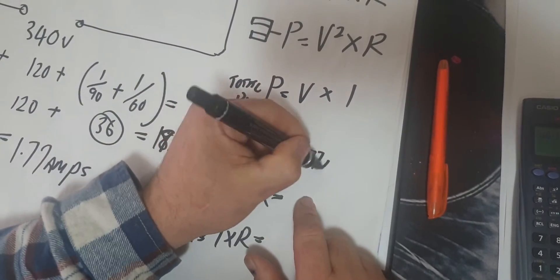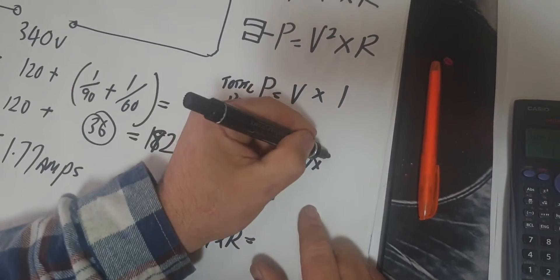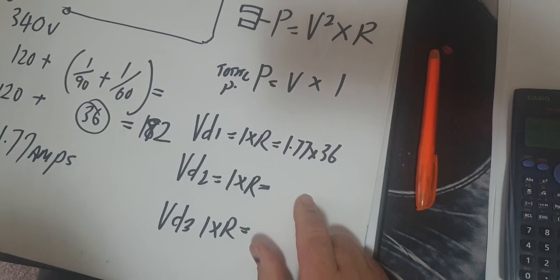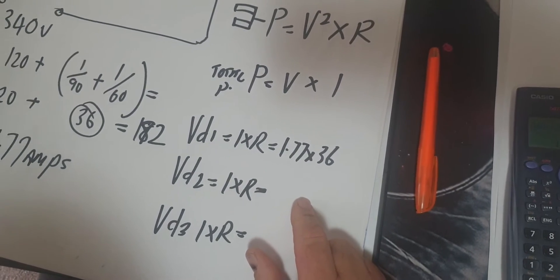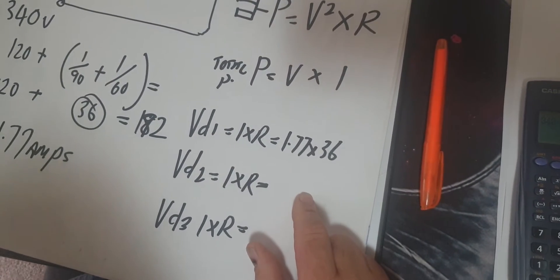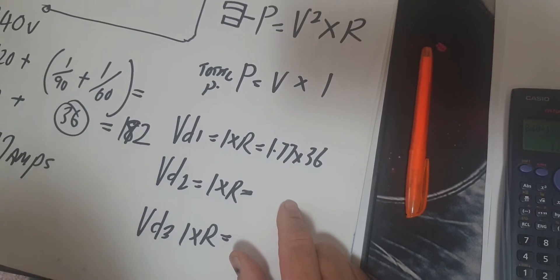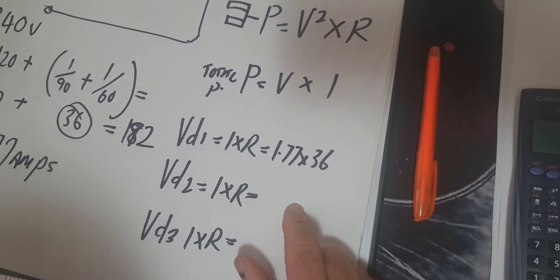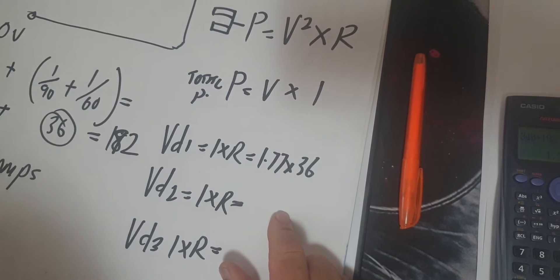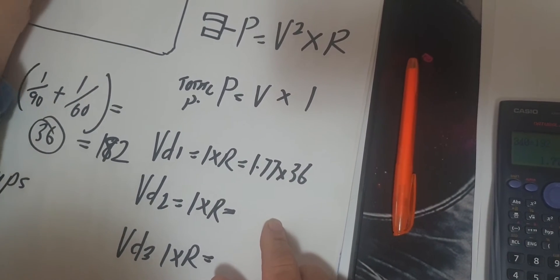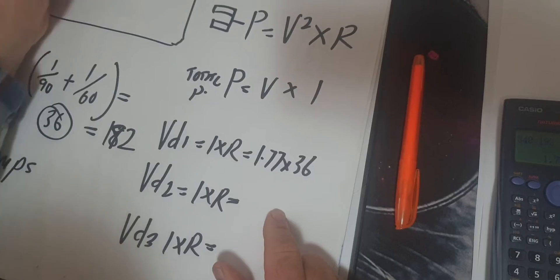We've got 1.77 times 36. Why am I using 36 here? Because 36 is the current flowing through the one value here. But if I look at it, it's a parallel path. I can't have the current flowing through the 60 and nothing, because current is flowing through both resistors, comes back to one, comes back and splits again. So 36 will be here again.